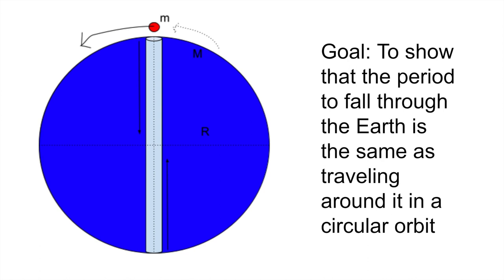So our goal is to show that the period to fall through the earth is the same as traveling around it in a circular orbit. This means that the mass will move to the other side of the earth and then it will come back to the initial position. And when that happens, we say a period has passed. And I claim that that time, that period is the same if it were to travel around the earth at an altitude of nearly zero.